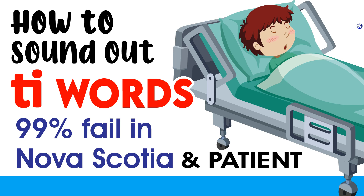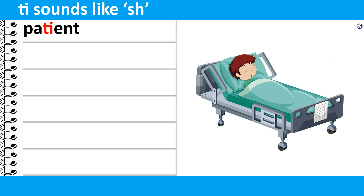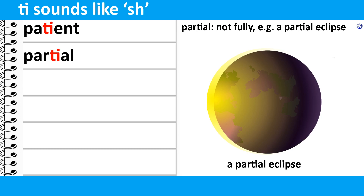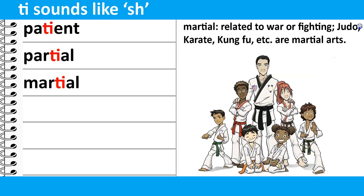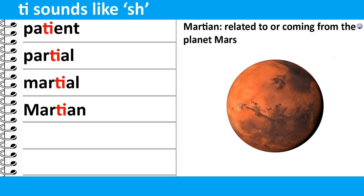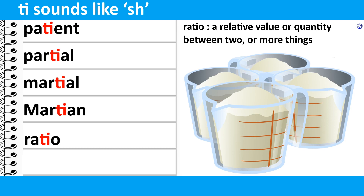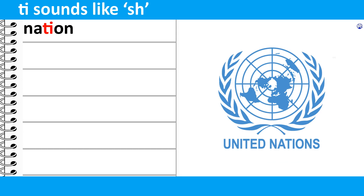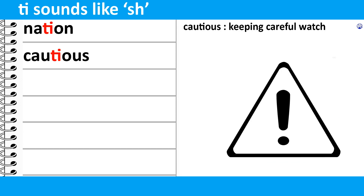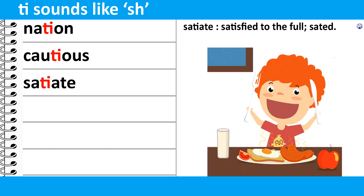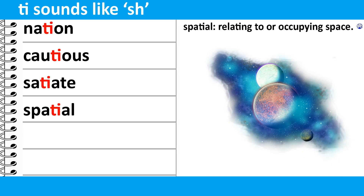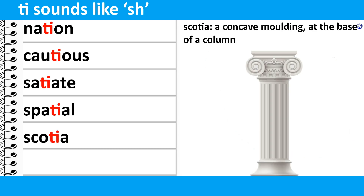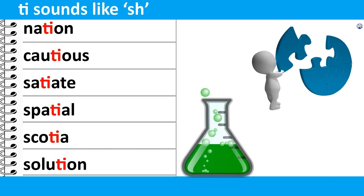Please check these examples: Patient, Partial, Martial, Martian, Ratio, Ration, Nation, Cautious, Satiate, Spatial, Scotia, Solution.